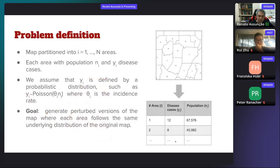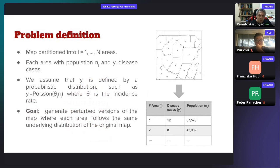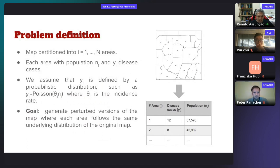In the disease mapping situation, we have a map partitioned into N areas indexed by i. Each area has a population N_i and a number of disease cases Y_i. We assume Y_i follows a probabilistic distribution — for example, Y_i being a Poisson random variable with a per-capita disease rate theta_i, where N_i is the population. Theta_i is the proportion of people that get the disease during a certain time period. The goal in detecting clusters of disease is to find spatial clusters where this rate is substantially larger than in the rest of the map.